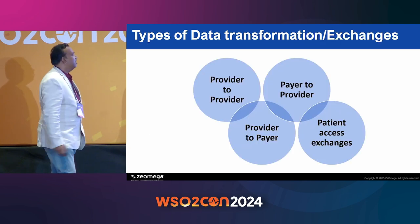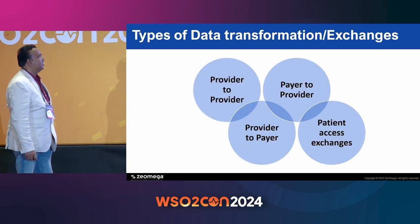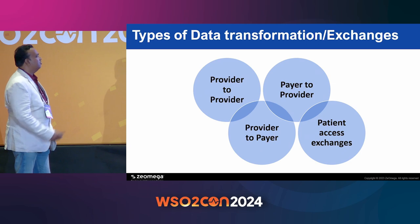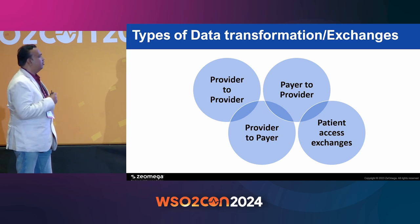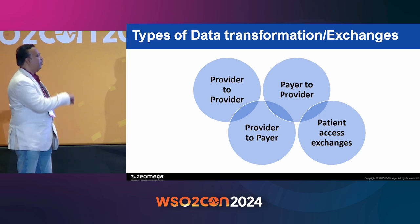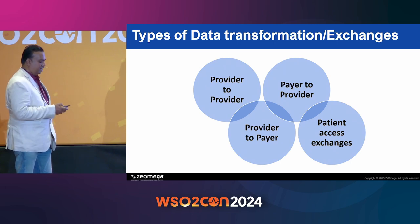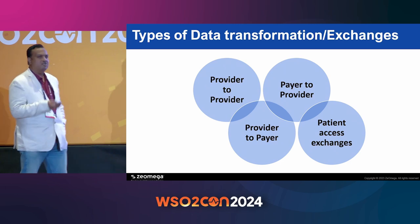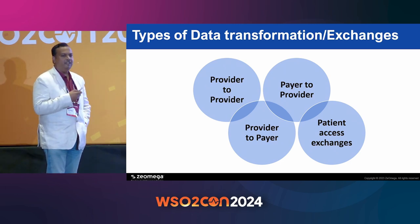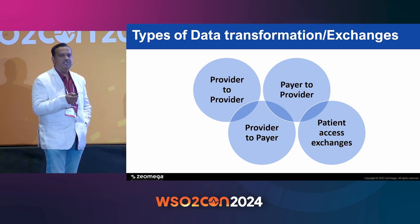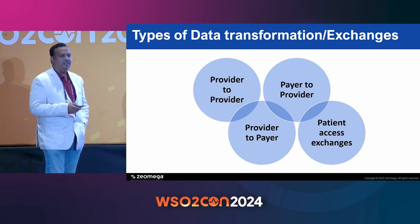Different types of transformation and exchange include provider to provider, payer to provider, provider to payer, and patient access exchanges. At the end of the day, the patient has to see the data — how their benefits look, how many times they visited the clinic, how many times they were hospitalized, how many visits they had in a whole year.